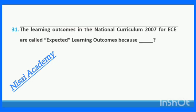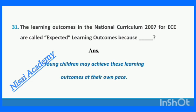Question 31: The learning outcomes in the National Curriculum 2007 for Early Childhood Education are called 'expected learning outcomes' because young children may achieve these learning outcomes at their own pace.